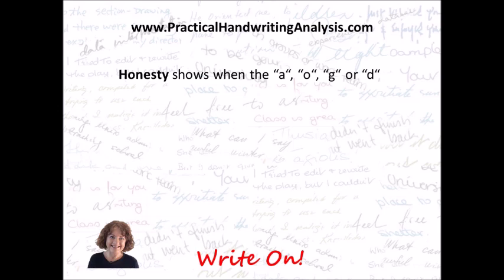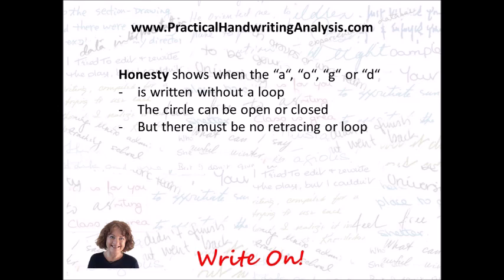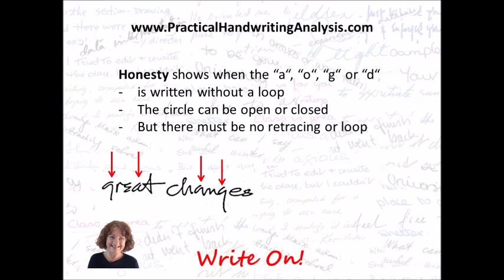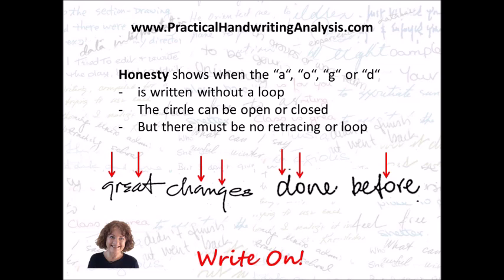Honesty shows where the A, O, G, or D is written without a loop. The circle can be open or closed, but there must be no retracing or loop. So in the examples shown, there are G's and A's that are open with no loops or hooks — just what we call clean circles. And there are closed ones — D's and O's — but again, no loops and no hooks, so that shows honesty.